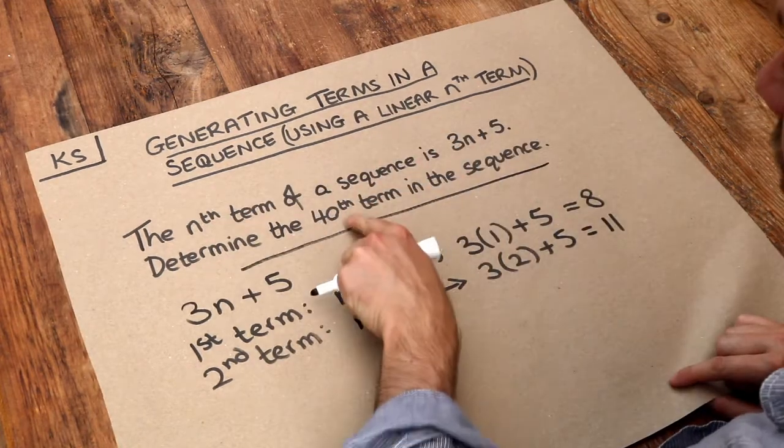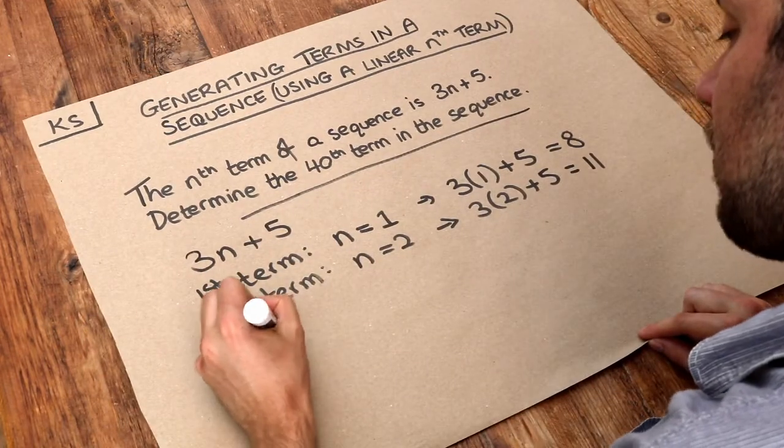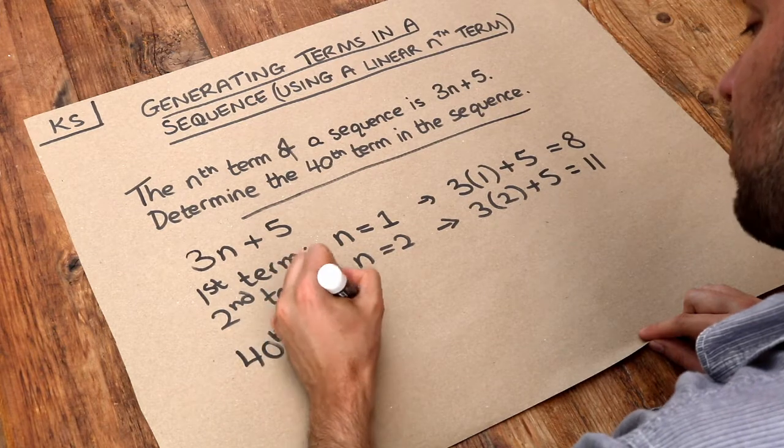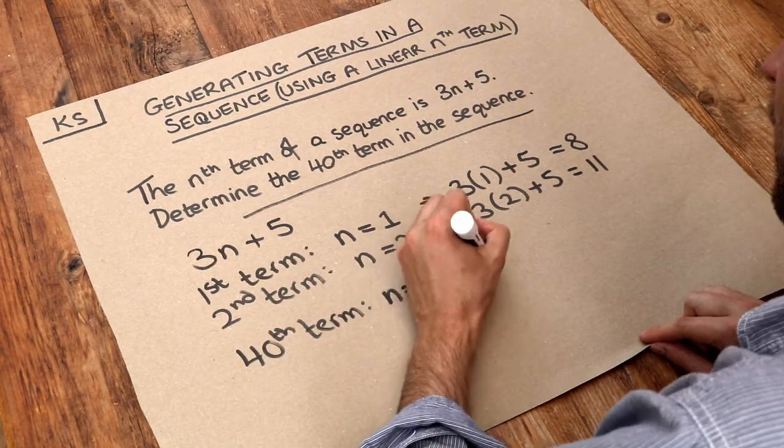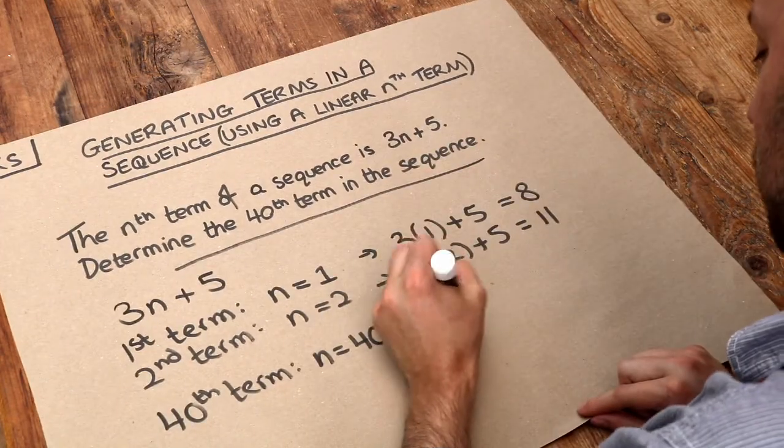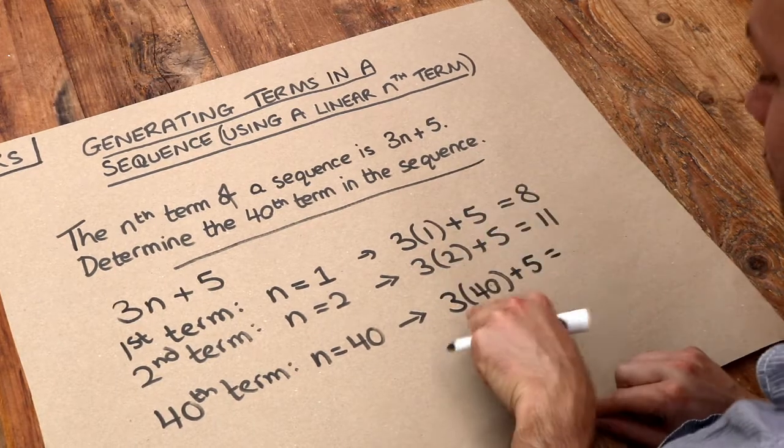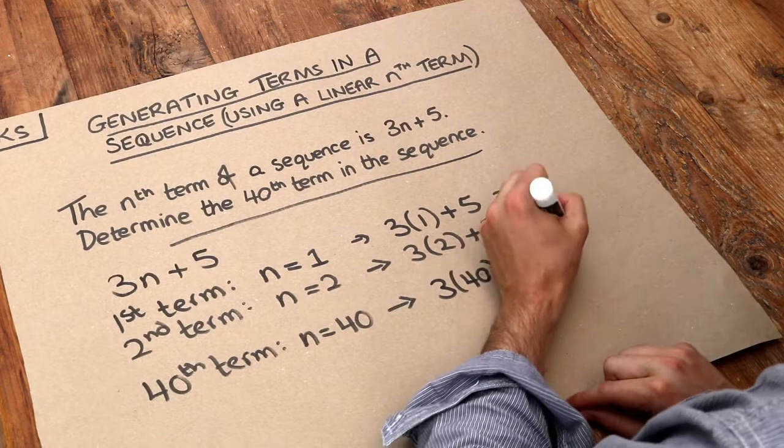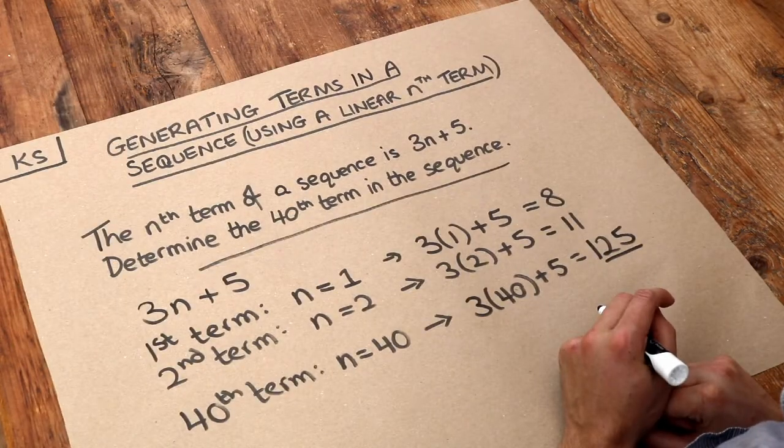But we want the 40th term of the sequence, that's the question. So if it's the 40th term we want, then we just make n equal to 40. So we do 3 times 40 plus 5, because n is 40. Now 3 times 40 is 120, plus 5 is 125. So that will be the answer to this question. Thank you.